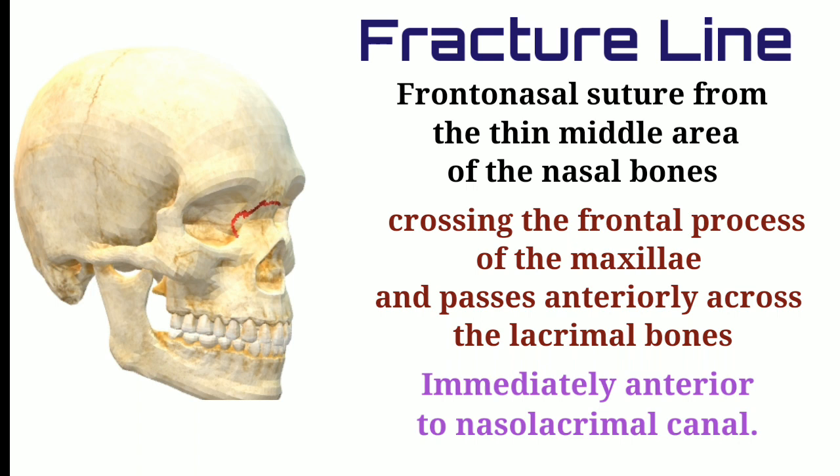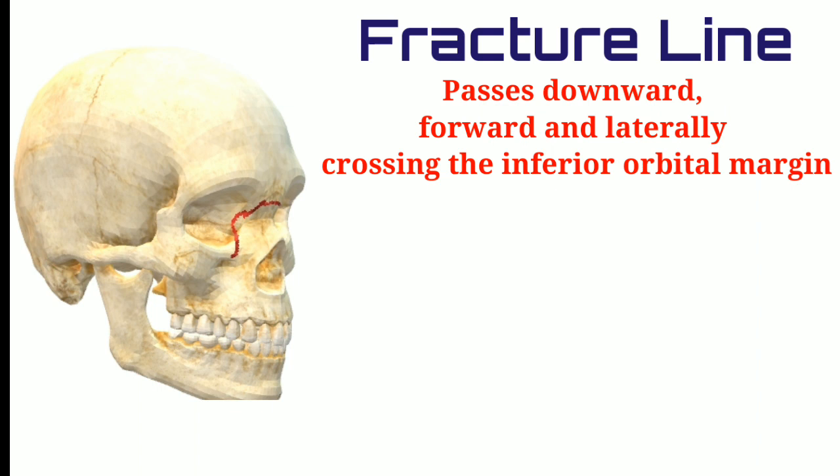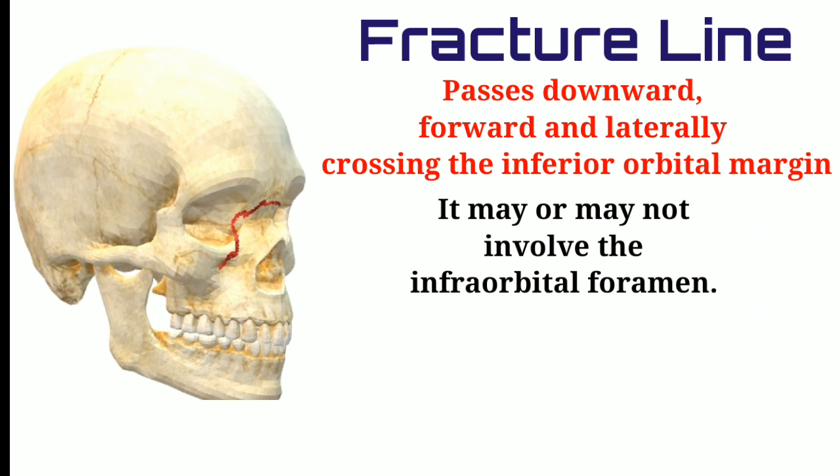After passing anterior to the nasolacrimal duct, the fracture line goes downwards and laterally to involve the inferior orbital margin, then continues downward and laterally. During this course, it may or may not involve the infraorbital foramen.